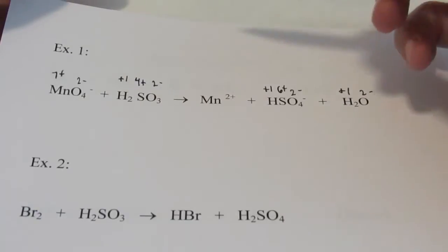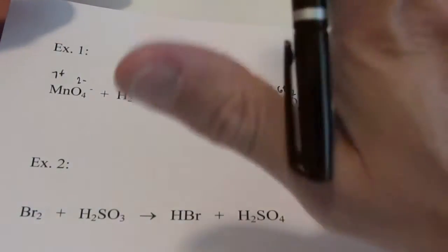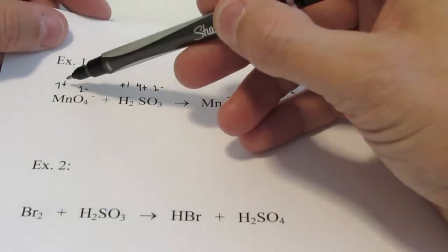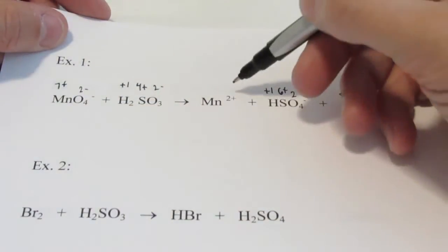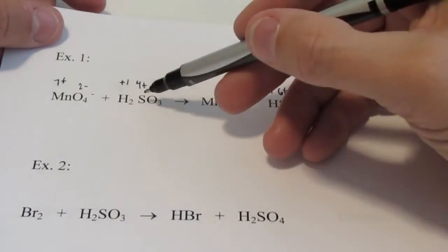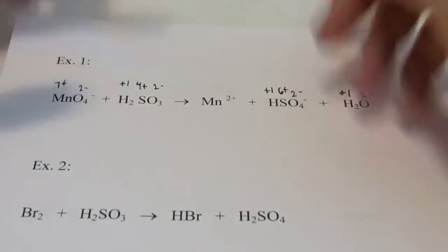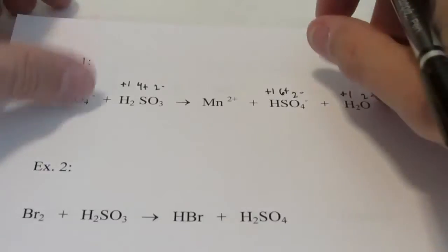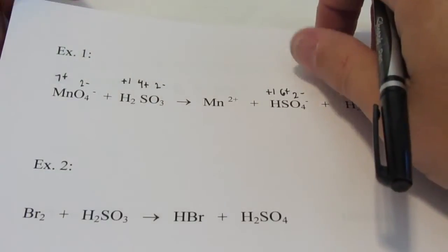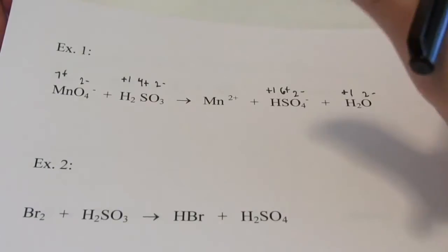Let's do step 1A — balance the atoms whose oxidation number changed. Manganese went from 7⁺ to 2⁺; I have one of each, so they're already balanced. Sulfur went from 4⁺ to 6⁺; I have one of each, already balanced. So step 1A we can skip in this case because the atoms that changed oxidation number are already balanced.